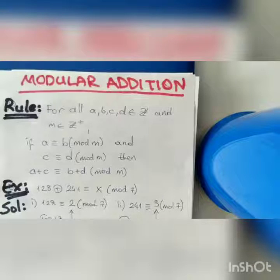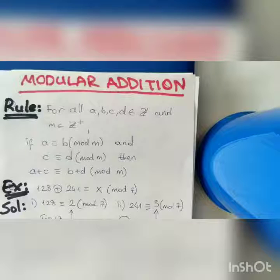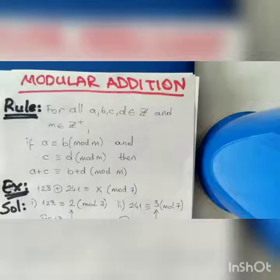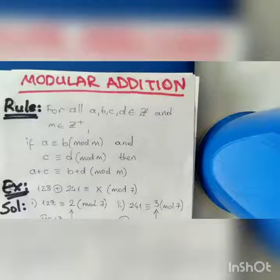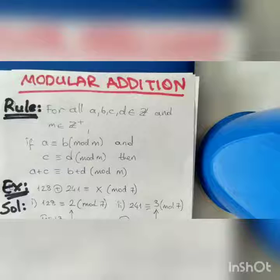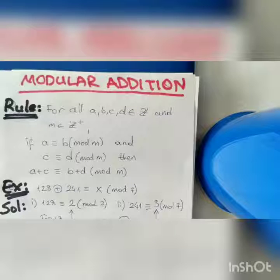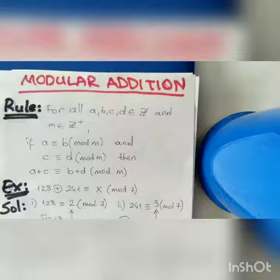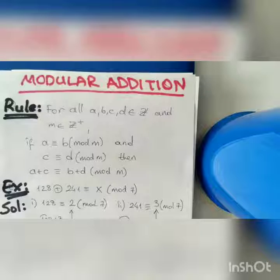In this lesson we will continue our topic modular arithmetic, and today we will do some operations in modular arithmetic. The first one is modular addition. The rule is: for all a, b, c, d which are elements of Z and m which is an element of positive Z, if a is equivalent to b modulo m and c is equivalent to d modulo m, then a plus c will be equivalent to b plus d modulo m.